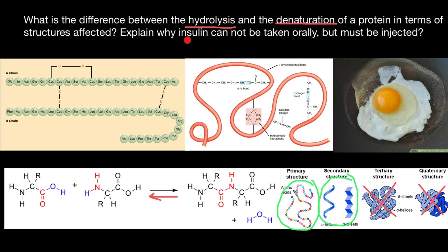Now let's answer the question: explain why insulin cannot be taken orally but must be injected. Insulin is a hormone made of amino acids. If we take it orally, each amino acid would be broken down — that is how our digestive system works — and it would not be able to function as a hormone that regulates the uptake of sugar by our cells. Insulin must be injected to bypass our digestive system and be delivered directly into our blood.